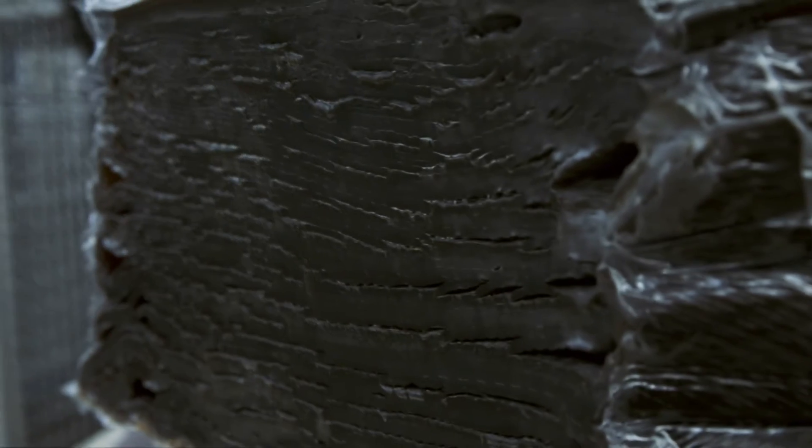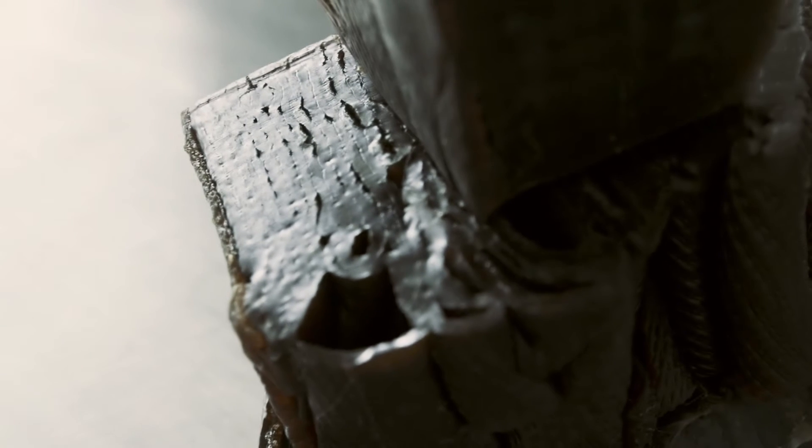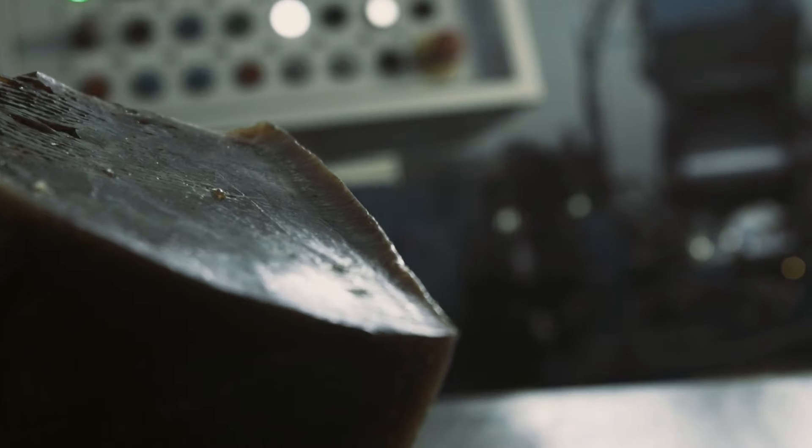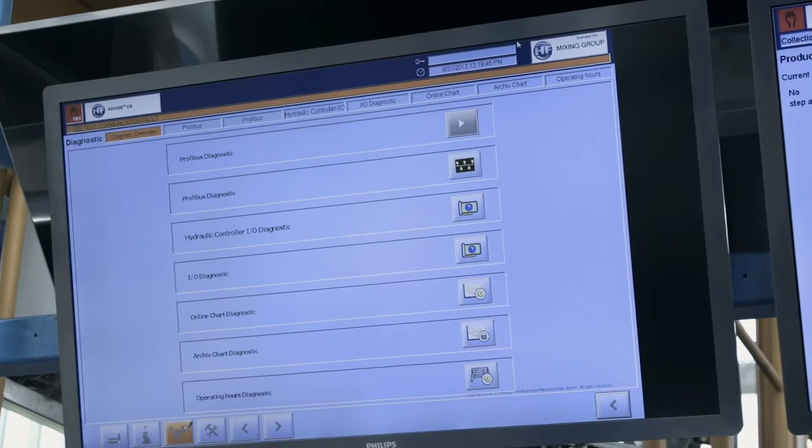The HF Mixing Group is a worldwide leader in the rubber processing industry. We supply our customers with machines that produce rubber compounds. Some of these machines are developed and produced here at the Freudenberg manufacturing site.